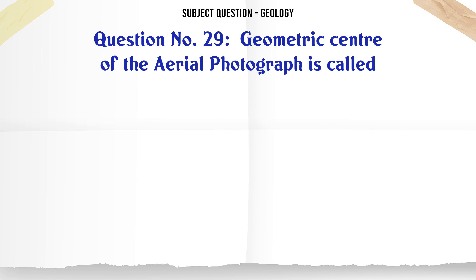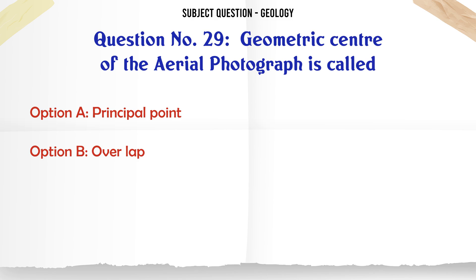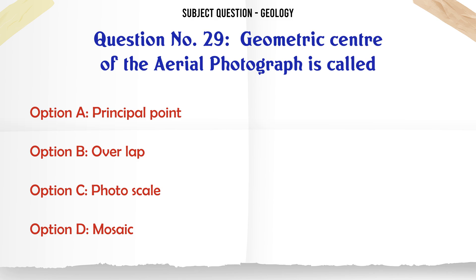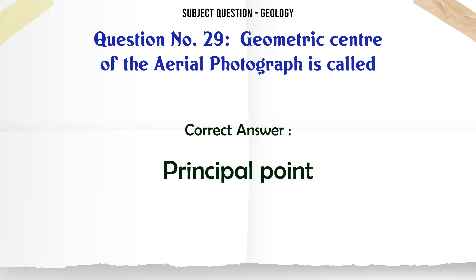The geometric center of an aerial photograph is called: A. Principal point. B. Overlap. C. Photoscale. D. Mosaic. The correct answer is Principal point.